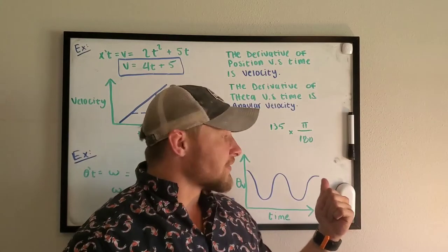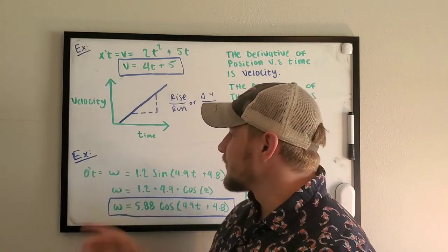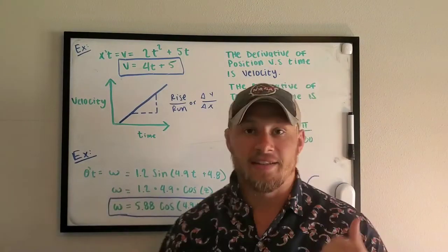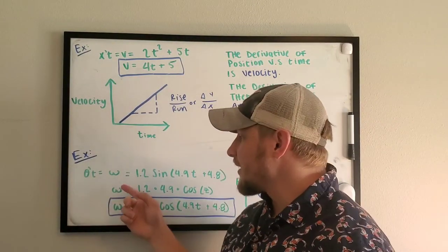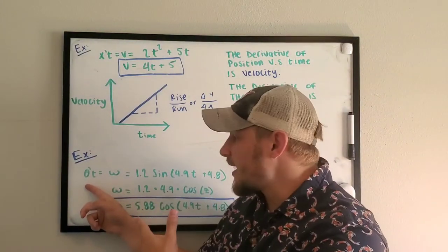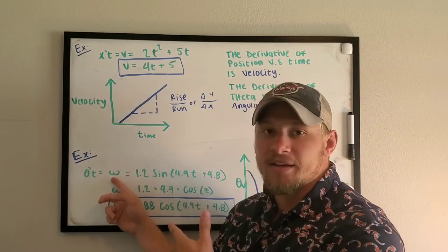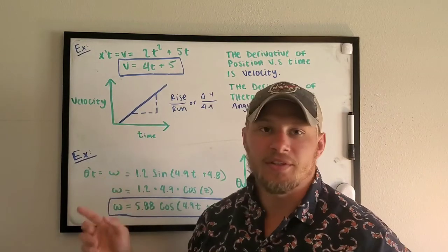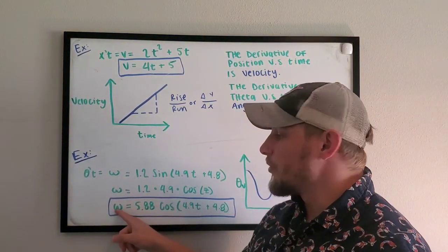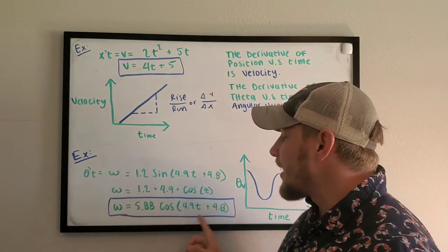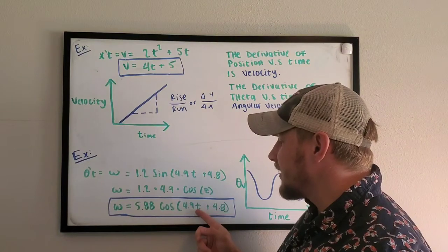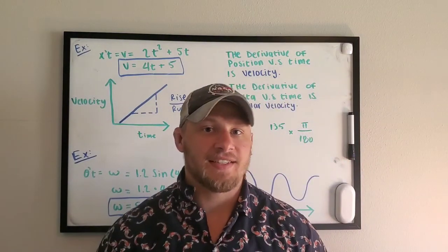Well, this week we have an angular velocity. So we're going to get something that looks like this. This is what we came up with in that tracker video. When we analyze the graph, this was that function. Now, if we want to take the derivative of that, we get what's called omega, which is represented by this w looking thing. So we take the derivative of this and we get omega, and that gives us our angular velocity.